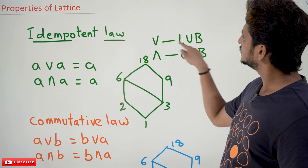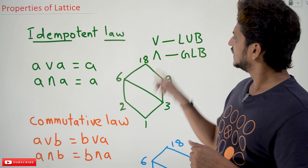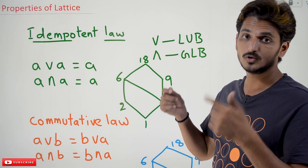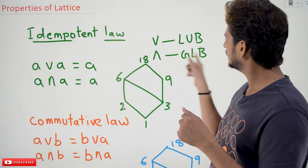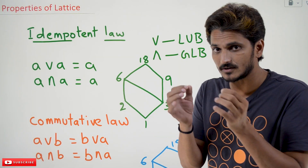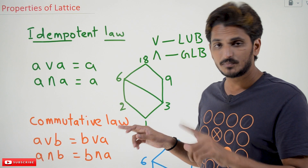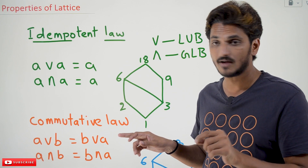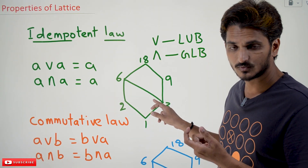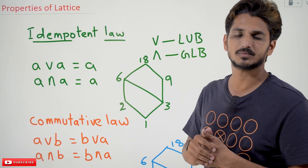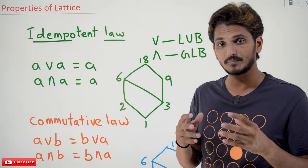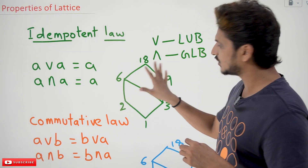This is the symbol we use to mention least upper bound, and this is the symbol we use for greatest lower bound. So if you write like this, it means you are going to find the least upper bound and greatest lower bound. This is a lattice. When we say it is a lattice, you take any pair of elements — let's take 2, 3. For any pair of elements, you should have a least upper bound and a greatest lower bound. For the pair 2, 3, the least upper bound is 6, and the greatest lower bound is 1. If this holds for any pair of elements, then we call it a lattice.